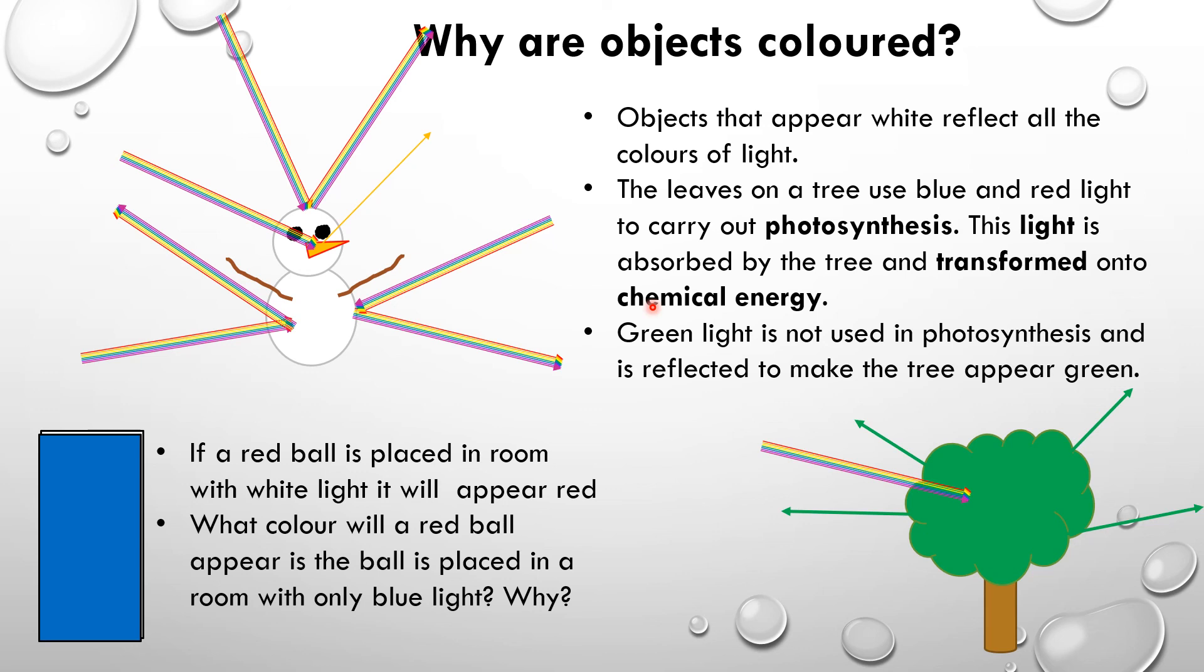In this case, the ball is unable to reflect any red light, because there is no red light in a room that just has blue light. So what would happen is the ball would appear black, because when the blue light hits the surface of the ball it is absorbed, and there is no other light to reflect, there's no red light available in a blue room, so it would appear black.